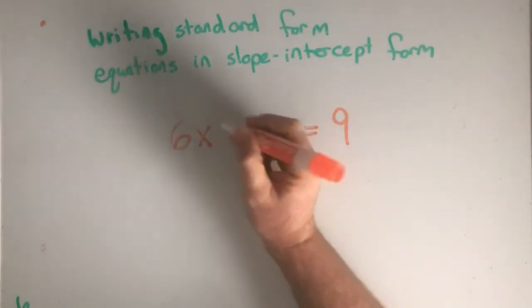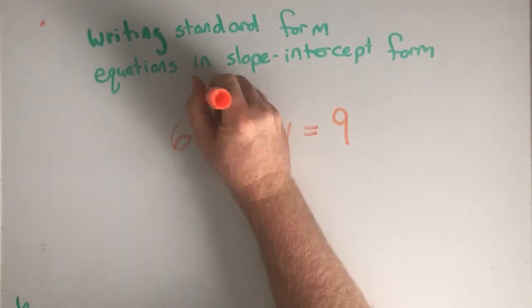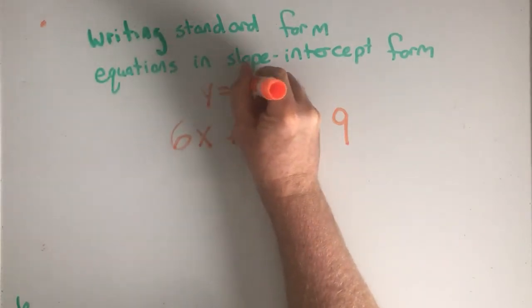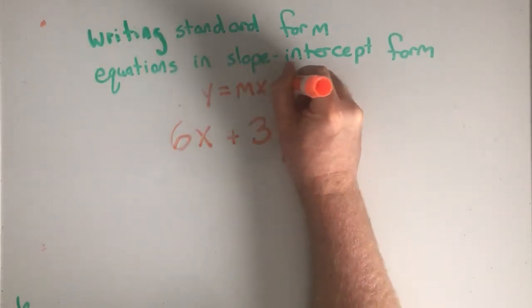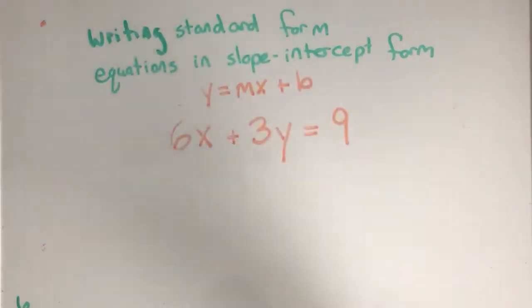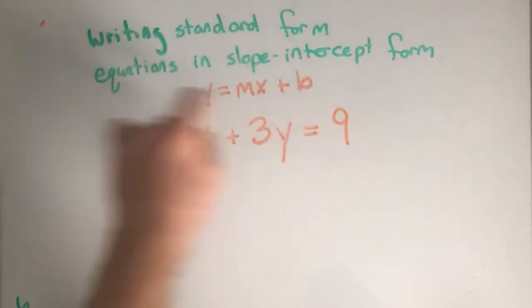So remember that slope-intercept form is y equals mx plus b. I want to get this to look like this.